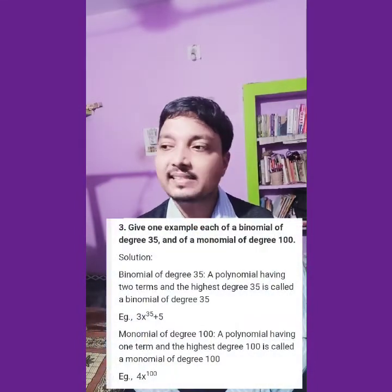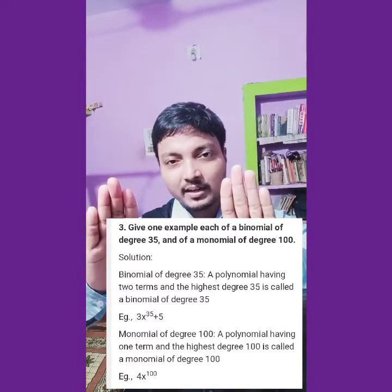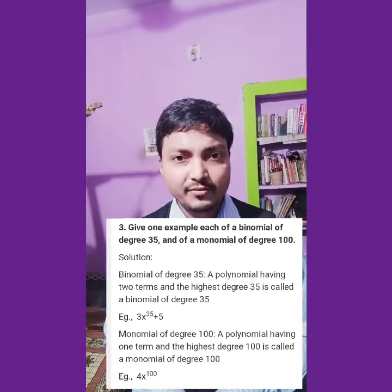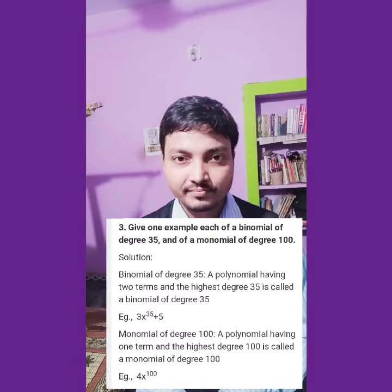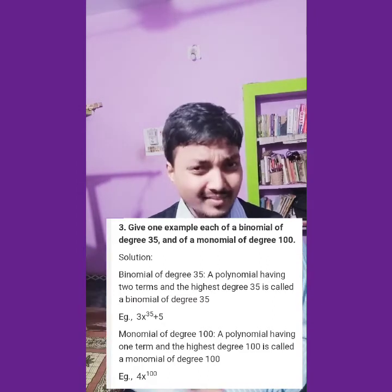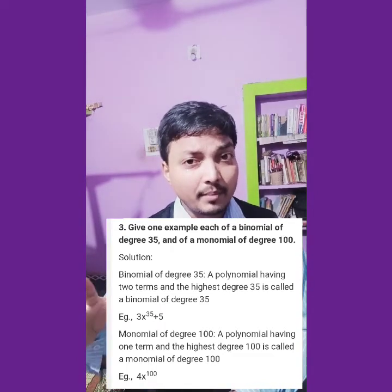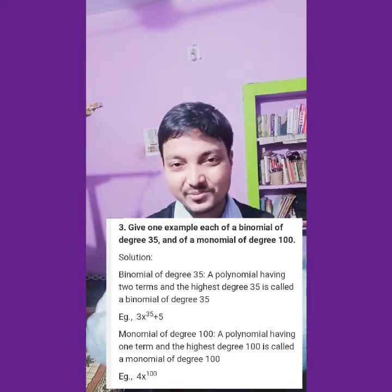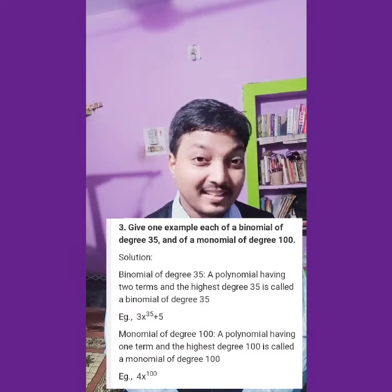Question number 3: give one example of a binomial of degree 35. Binomial means two terms, and the highest power must be 35. You can choose anything — for example, 8 to the power 35 plus 5, or x to the power 35 plus x, or 5x to the power 35 plus 6x to the power 30. Two terms with highest power 35. Also you could write 3 by 2 times x to the power 35 plus 1 by 2 times x to the power 10.